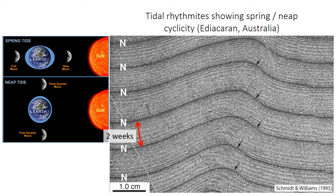The tidal range is very important because it controls the speed of the flood and ebb tidal currents as the tide rises and falls. The tidal range and therefore the speed of the tidal currents varies on an approximately two-week cycle because of the position of the moon. When the moon and sun are lined up, the tidal range is larger because their gravity is aligned — these are called spring tides. Neap tides occur when the moon and sun's gravity is not aligned and they are smaller. These cycles can be preserved in the rock record as tidal rhythmites, with the finer-grained, darker layers representing the neap tides.